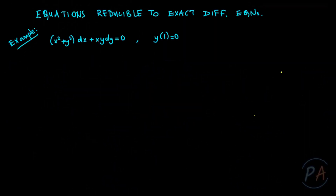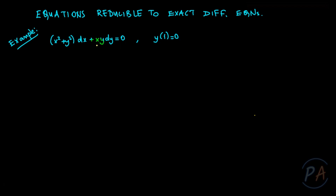Hi everyone. In this video we are going to solve an initial value problem constructed on a first order differential equation: (x² + y²)dx + xy dy = 0, with initial data y(1) = 0. Since the equation is given in differential form, let me check if the equation is exact or not. Let me name x² + y² as M(x,y) and xy as N(x,y).